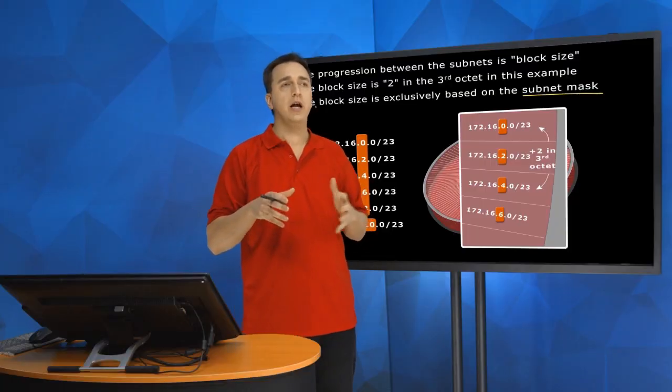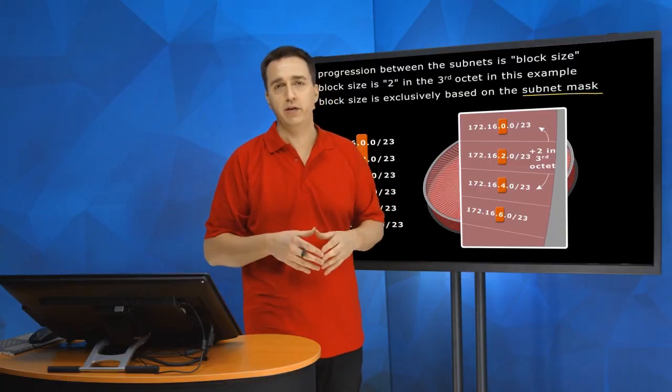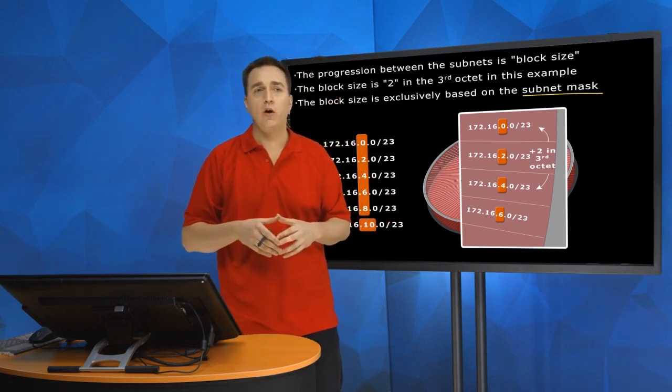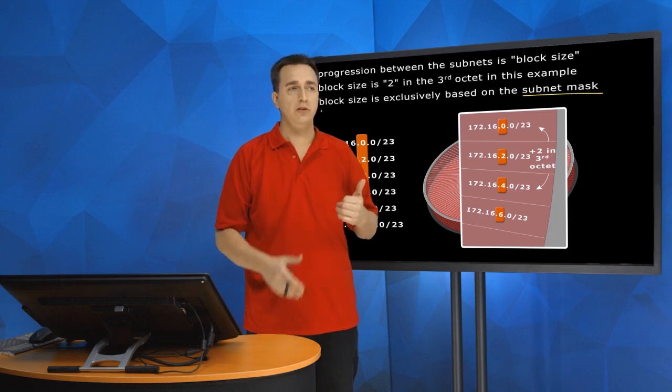Remember, in this scenario, we created 128 subnets. So we said the first four subnets was 0, 2, 4, 6.